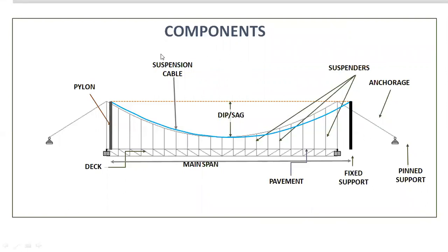You can see here the components of a cable suspension bridge. That part is called a pylon, also called a tower. This part is called the suspension cable. This is called the dip or sag. This part is the deck where the vehicles move. And the top part of the deck is called the pavement.